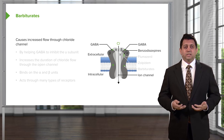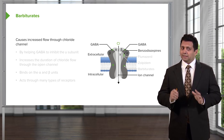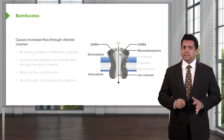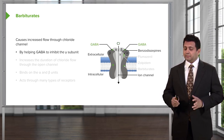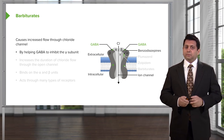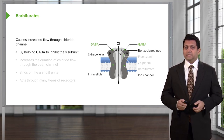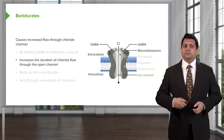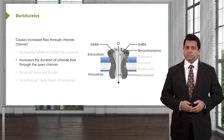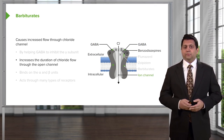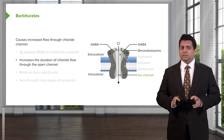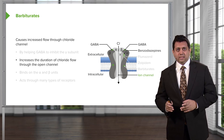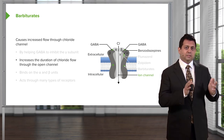Barbiturates also cause increased flow of chloride through the channel, but it does so a little bit differently than benzodiazepines. It helps GABA to inhibit the gamma subunit, so the gamma subunit is now inhibited and it opens up. But it increases the duration of chloride flow through opening — and that's different than the benzos. The benzos increase frequency; barbiturates increase duration.